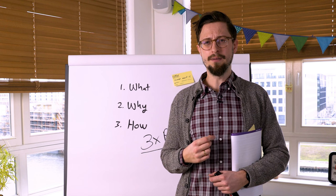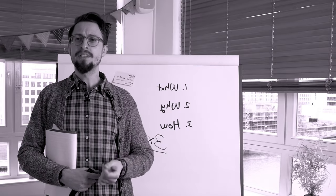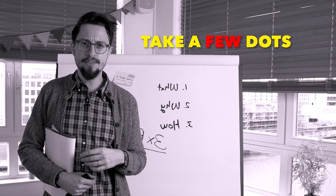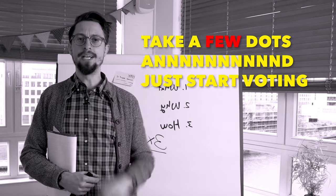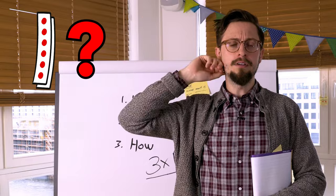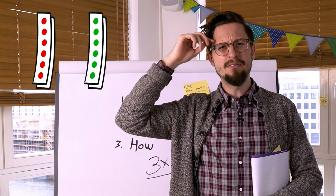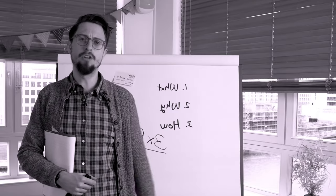It's when a facilitator says something like, 'Okay, so we're going to do some voting now. Take a few dots and just start voting.' And then someone's like, 'How many dots?' And the facilitator's like, 'Oh, you know, four or five.' And then someone else is like, 'Red or green dots?' And they're like, 'Oh yeah, whichever color you want.'